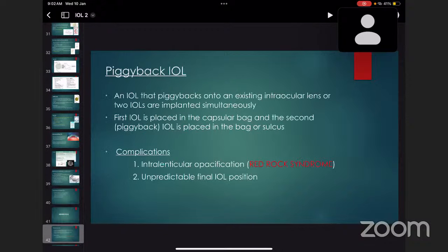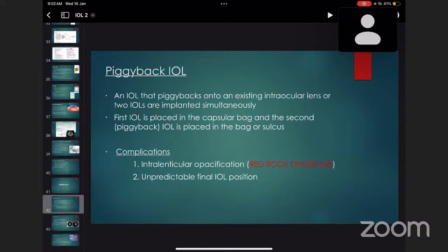Newer IOLs: first is piggyback intraocular lens. It's an intraocular lens that piggybacks onto an existing intraocular lens or two intraocular lenses are implanted simultaneously. First intraocular lens is placed in the capsular bag and second IOL is placed in the ciliary sulcus. But complications include interlenticular opacification which causes red rock syndrome and unpredictable final IOL position.